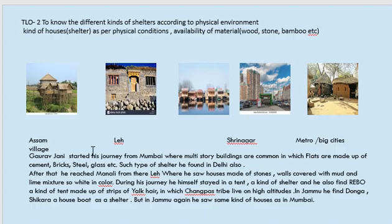The second targeted learning outcome of this lesson is to know the different kinds of shelters, meaning houses, according to the physical environment. The kinds of houses depend on the physical conditions and availability of materials like wood, stone, bamboo, or whatever is available in that place.